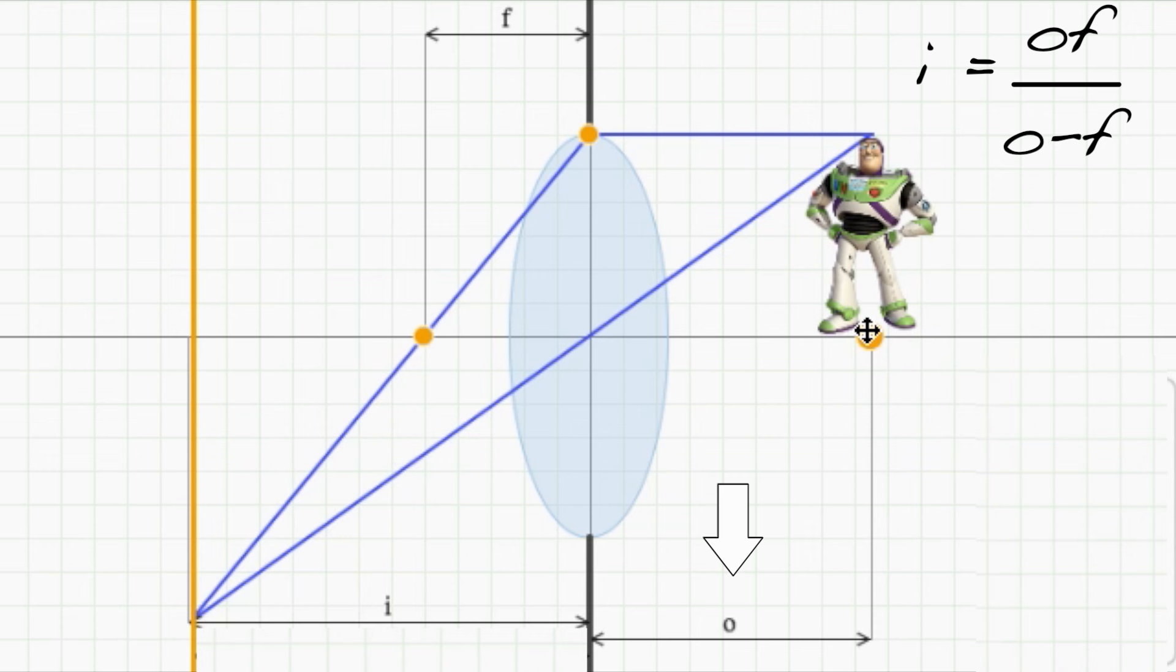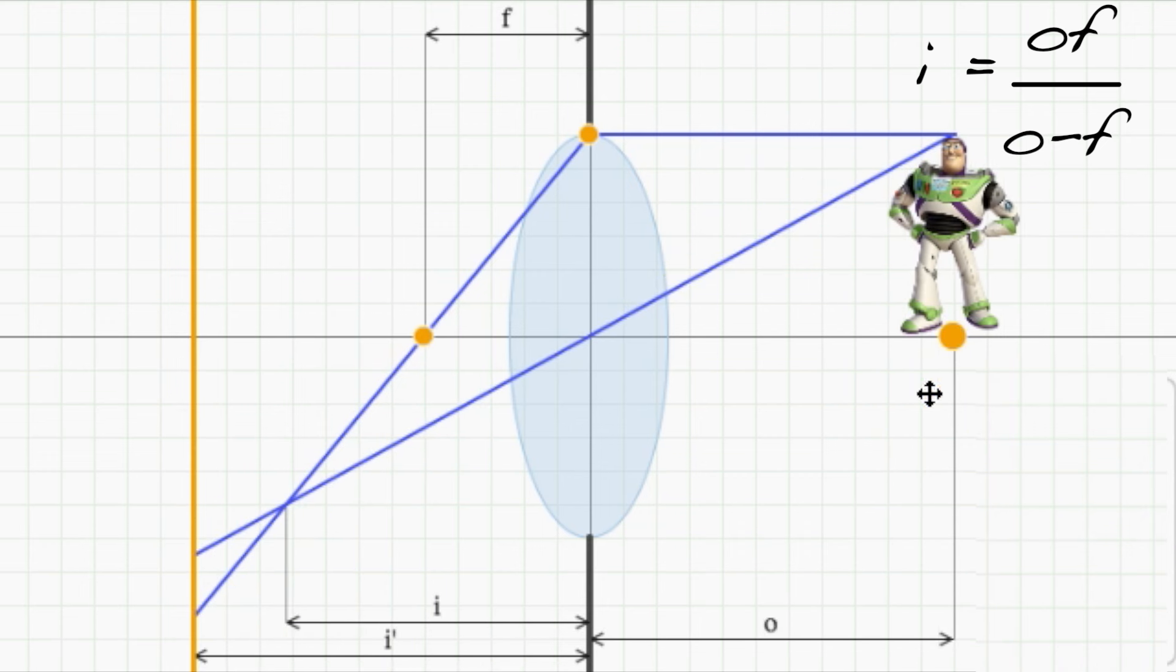But what about objects at some other distance? Well, they'll be blurry. They're not in crisp focus.